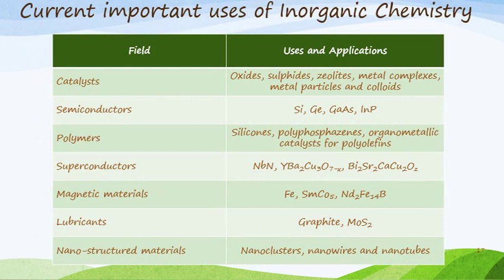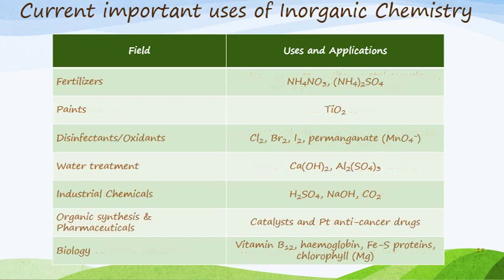What are the important uses of inorganic chemistry? We have catalysts, semiconductors, polymers, superconductors, magnetic materials, lubricants, and nanostructures, with different compounds having applications across all of these areas. We also have fertilizers, paints, disinfectants, oxidants, water treatment, industrial chemicals, organic synthesis, pharmaceuticals, and even biology. My own field of interest is bio-inorganic chemistry, where we look at things like vitamin B12, hemoglobin, iron-sulfide proteins, and chlorophyll — compounds that contain a metal atom bound to various other compounds or elements that have biological relevance to us.